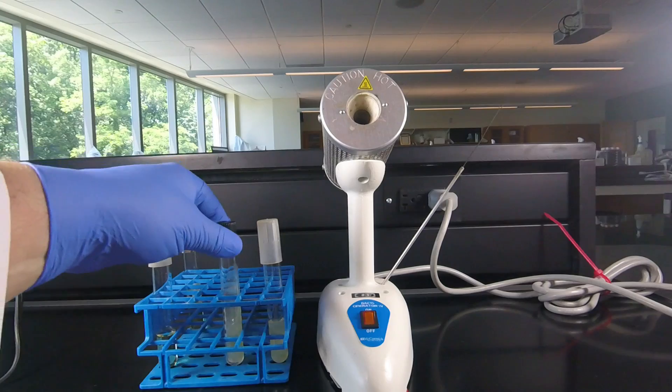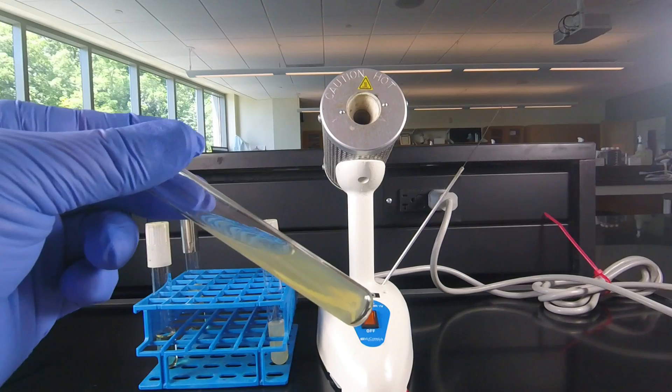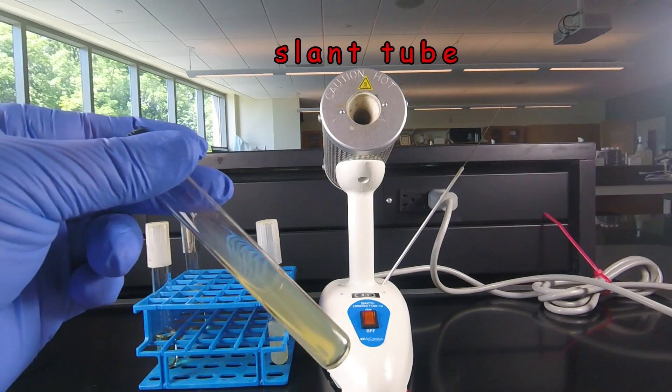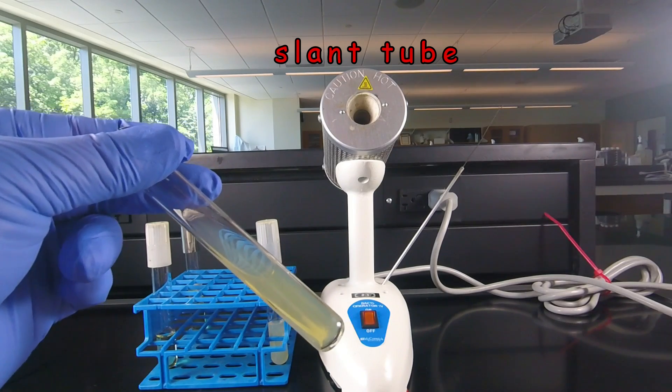We can also let the agar solidify in a tube at an angle, like we see here. And that gives us a nice flat surface on which to grow microorganisms. We call this a slant tube and we call those slant cultures.